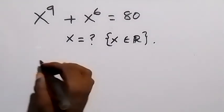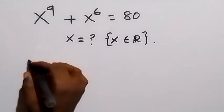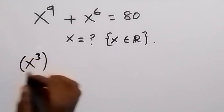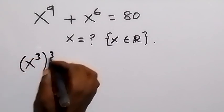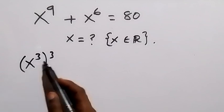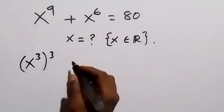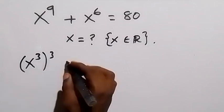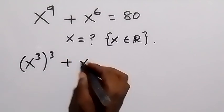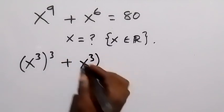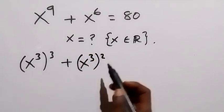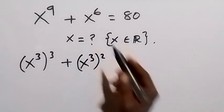From here, let's write x⁹ as x raised to power 3, then raised to power 3. By the law of indices, the powers multiply and that gives us 9. Similarly, x⁶ can be written as x raised to power 3, then raised to power 2, which gives us back x raised to power 6.